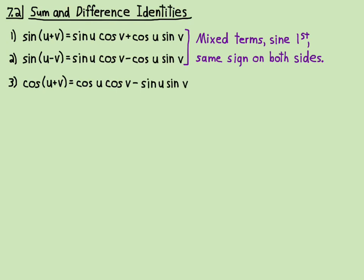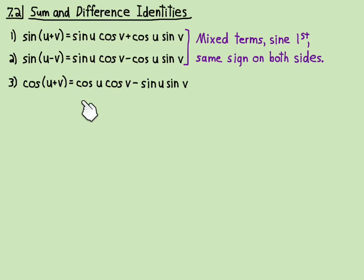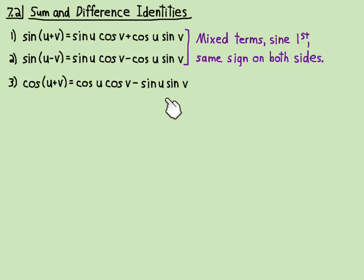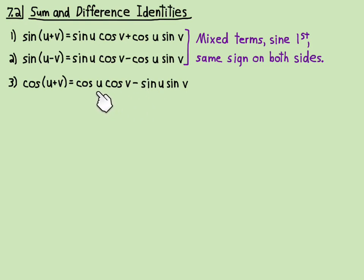For cosine, you start with cosine first, and again it's uv, uv, uv in the same order. The first term is made up of both cosines: cosine u, cosine v. And then the second term is made up of both sines: sine u, sine v. It starts with the cosine, then the minus. If you did the sine first, it would be wrong.